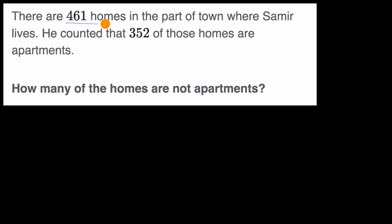So we're starting with 461 homes, and we want to know how many are not apartments. So what we want to do is take out the number that are apartments, and they tell us that 352 of those homes are apartments. So we'll take out the number that are apartments, and what we're left with is going to be the number that are not apartments. So we really just have to evaluate 461 minus 352.